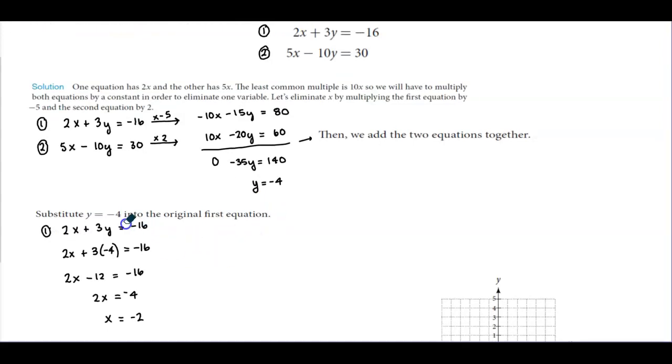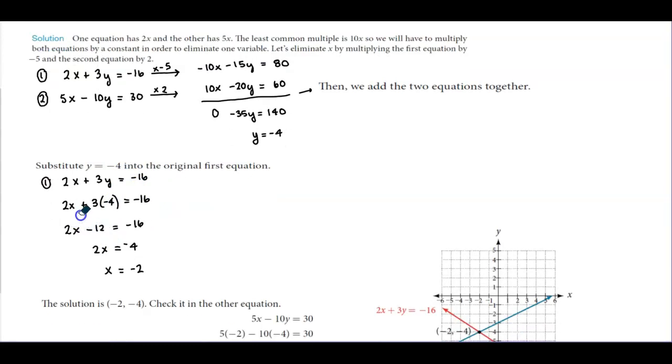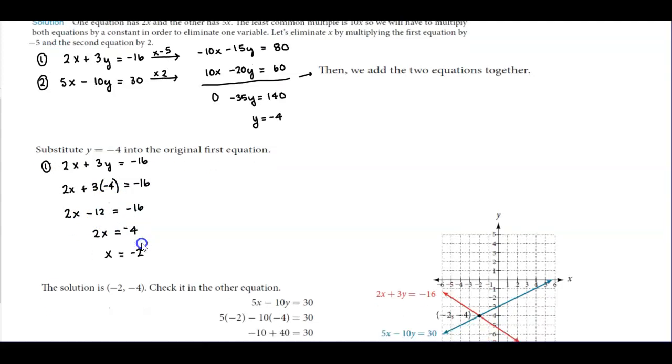Now we plug that value of negative 4 into the original first equation. We have 2x plus 3y, where y equals negative 4, so 2x plus 3 times negative 4 equals negative 16. 3 times negative 4 is minus 12, so we have 2x minus 12 equals negative 16. When we add 12 to both sides, we get 2x equals negative 4. Divide both sides by 2 and we get x equals negative 2.